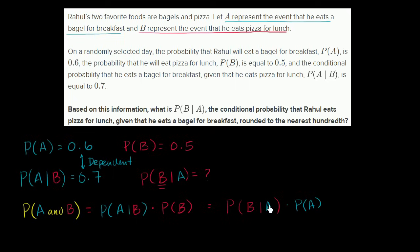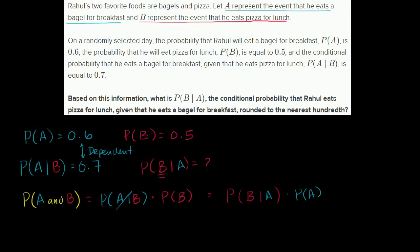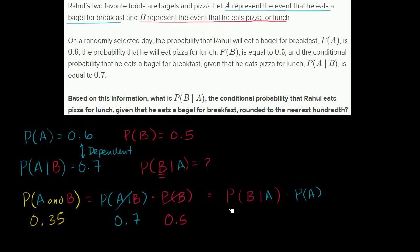So why is this helpful? We know a lot of this information. We know the probability of A given B is 0.7, and we know that the probability of B is 0.5. So the probability of A and B is 0.7 times 0.5, which equals 0.35. And that equals the probability of B given A times the probability of A — which we know is 0.6.